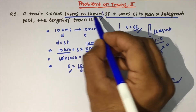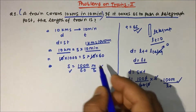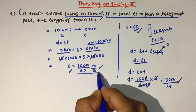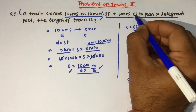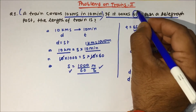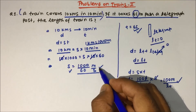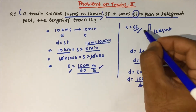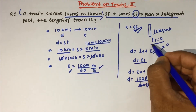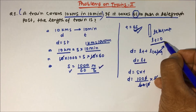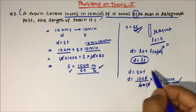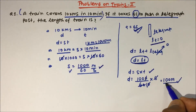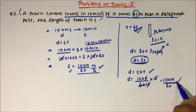From the first statement in the question, we found the speed in meters per second, because the time in the second part is given in seconds. Telegraph length is 0 compared to the train's length, so distance equals only the length of the train. Using the formula gives us 100 meters.